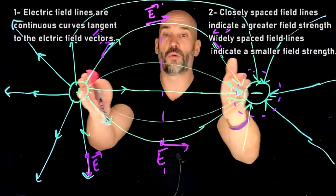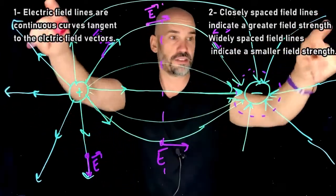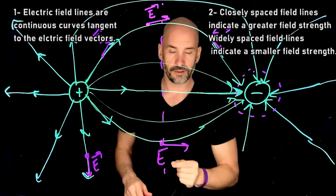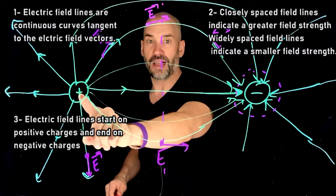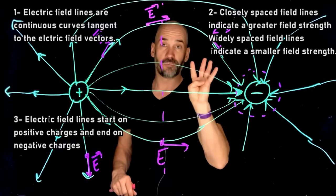And then farther away from the particle, either way over here or way over here, you expect to have spread out lines, and that'll be a smaller electric field. Okay, rule number three, electric field lines always start on positive charges and end on negative charges. I already mentioned that one.